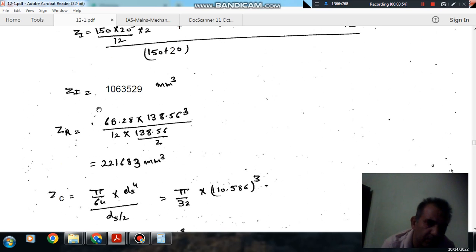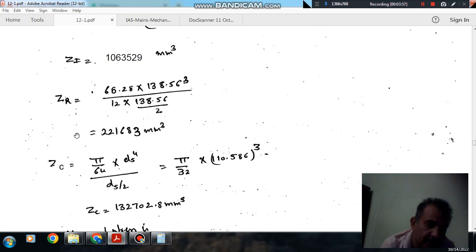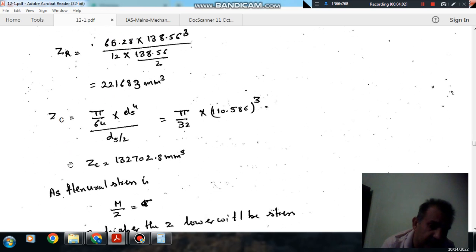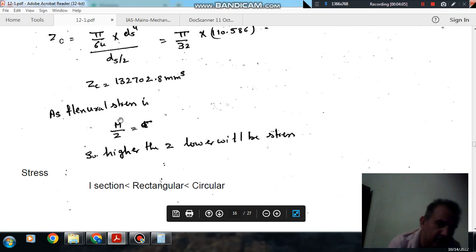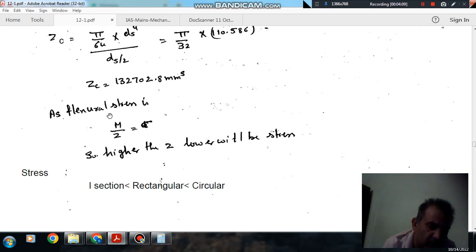So we can see that Z is maximum for I-section, and then it is for the rectangular section, and minimum for circular section. And we know that from the bending equation, that is M by I is equal to sigma by y, and Z is I by y.